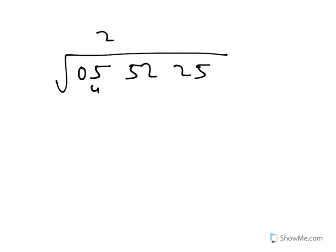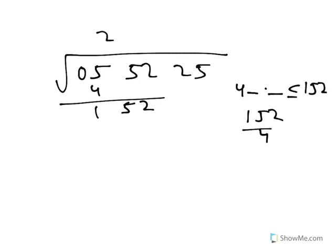Again, 40 something times something is close to 152. 152 over 40 is still 3, and 43 times 3 is 129, which is as close as I'm going to get to 152.